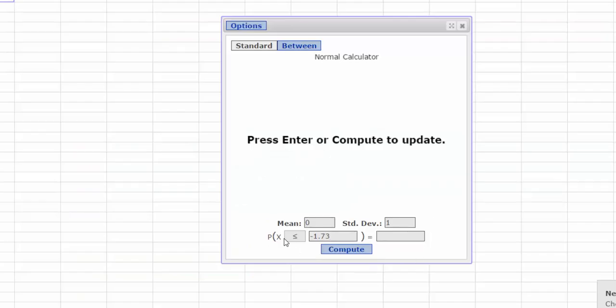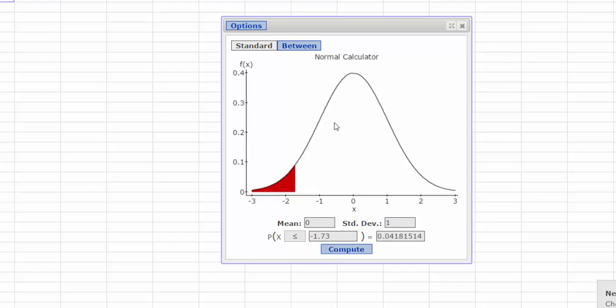So here is the area to the left of negative 1.73. I press Compute. There's my normal curve, and then this is the area to the left. So it looks like we're going to use 0.0418.